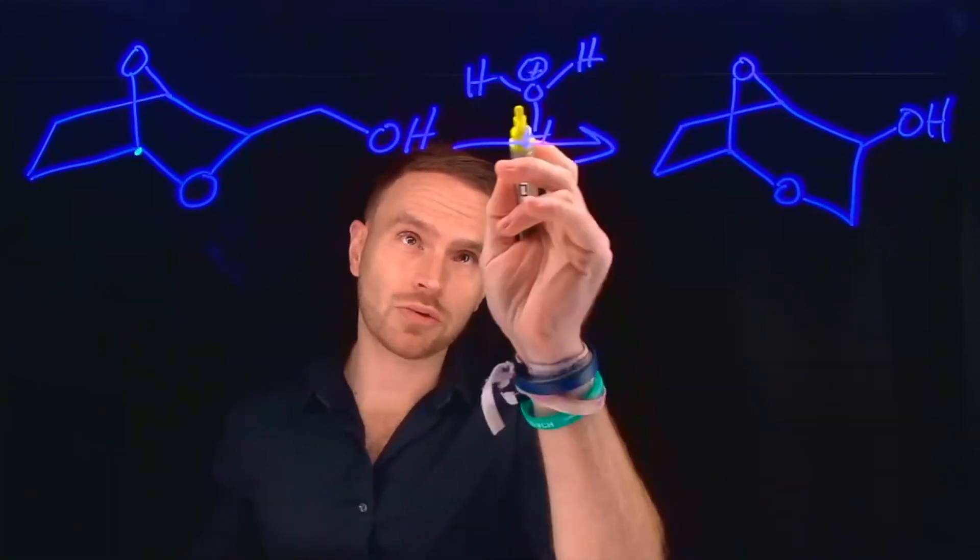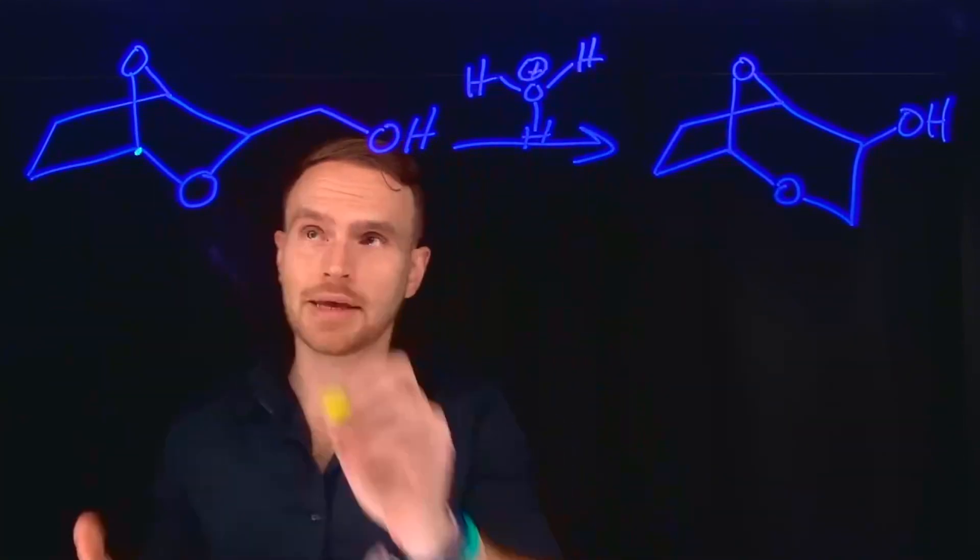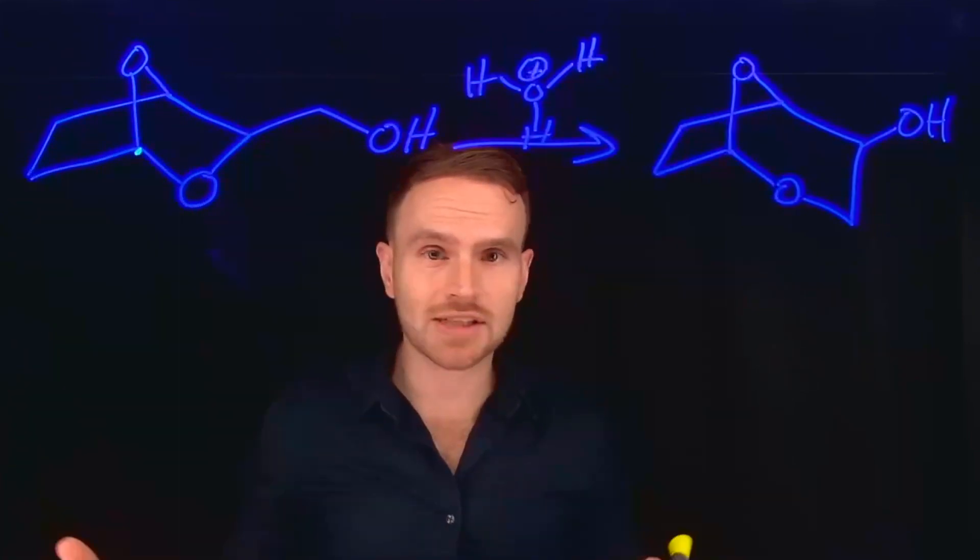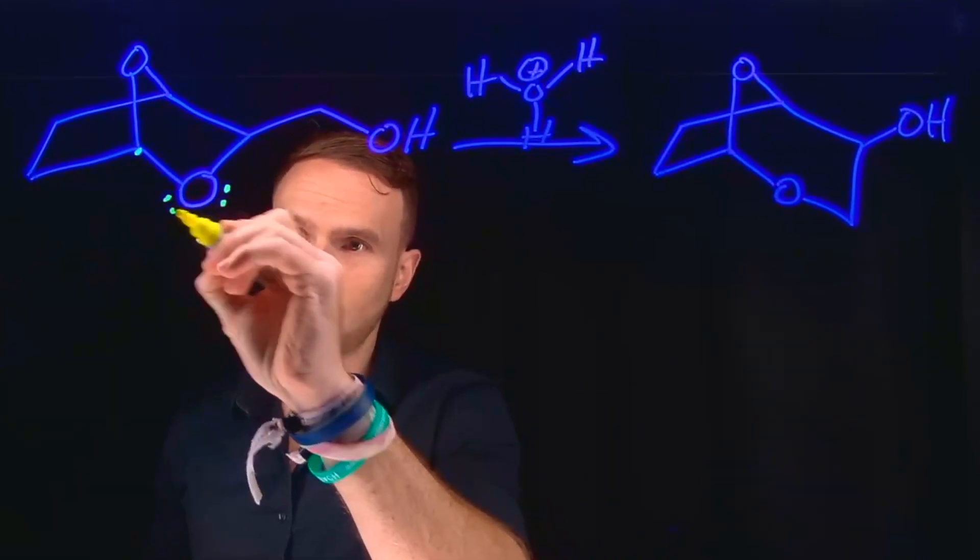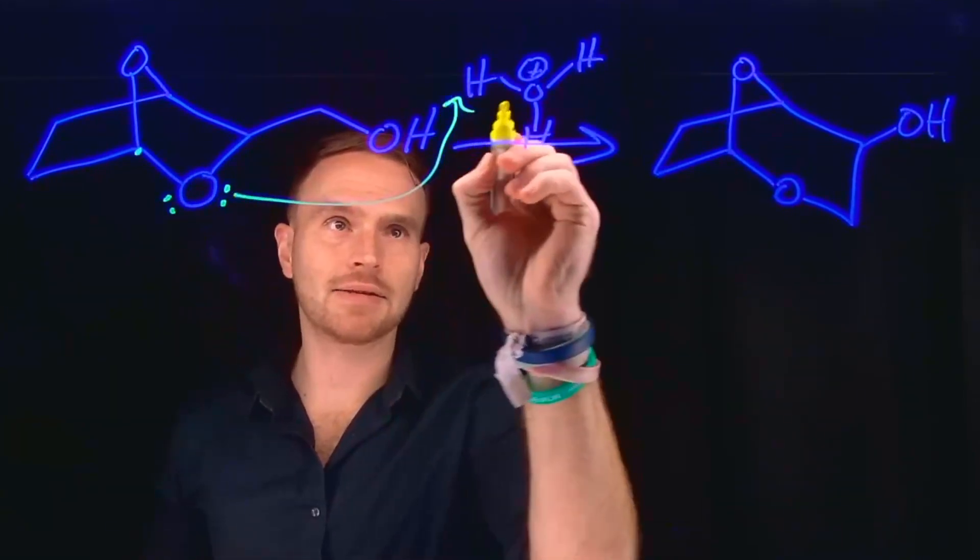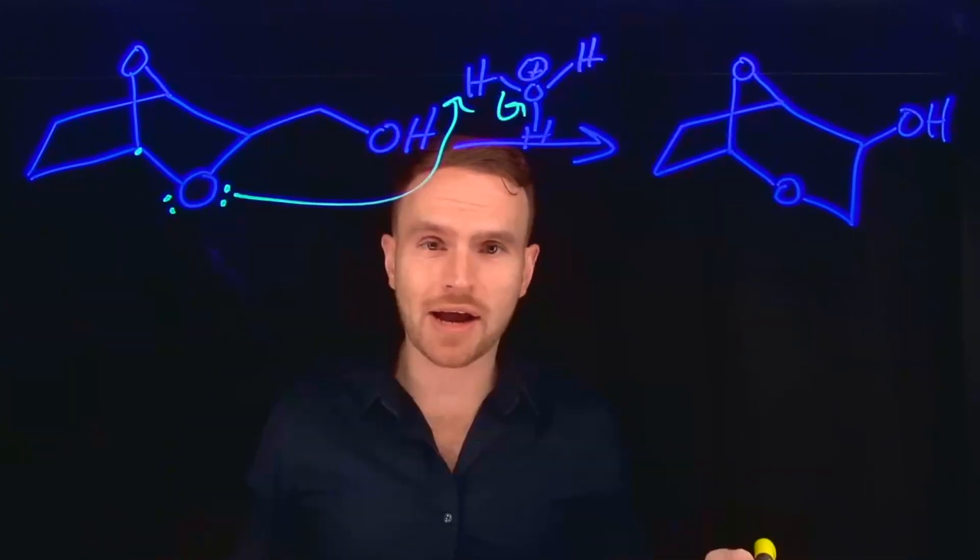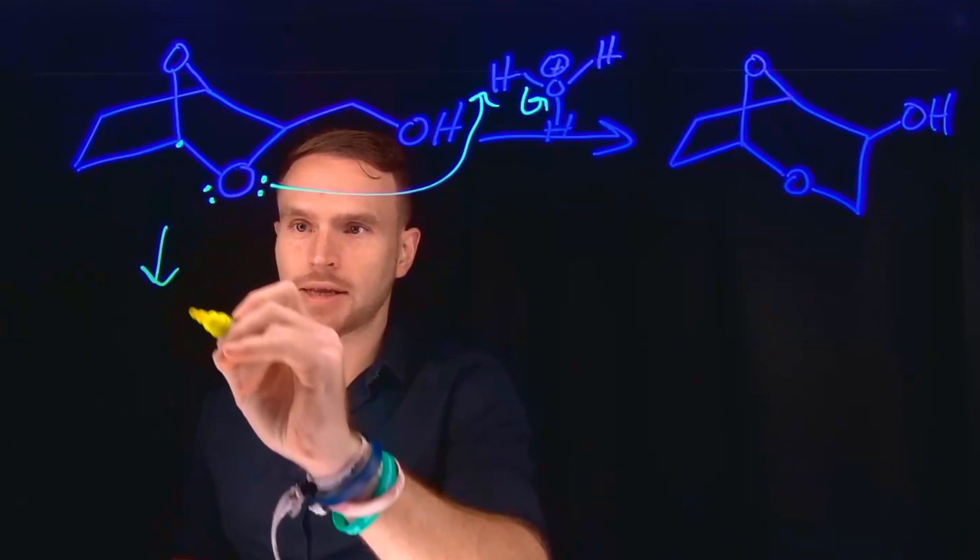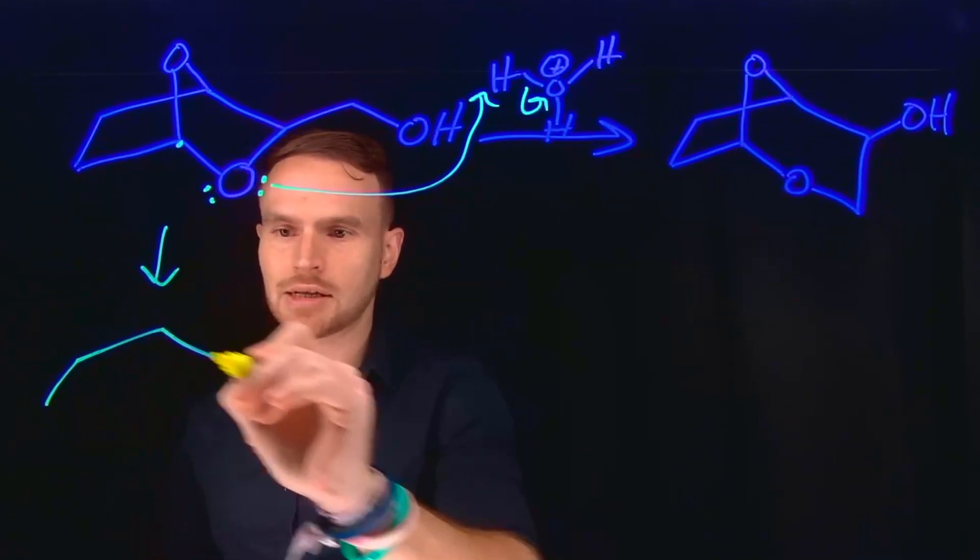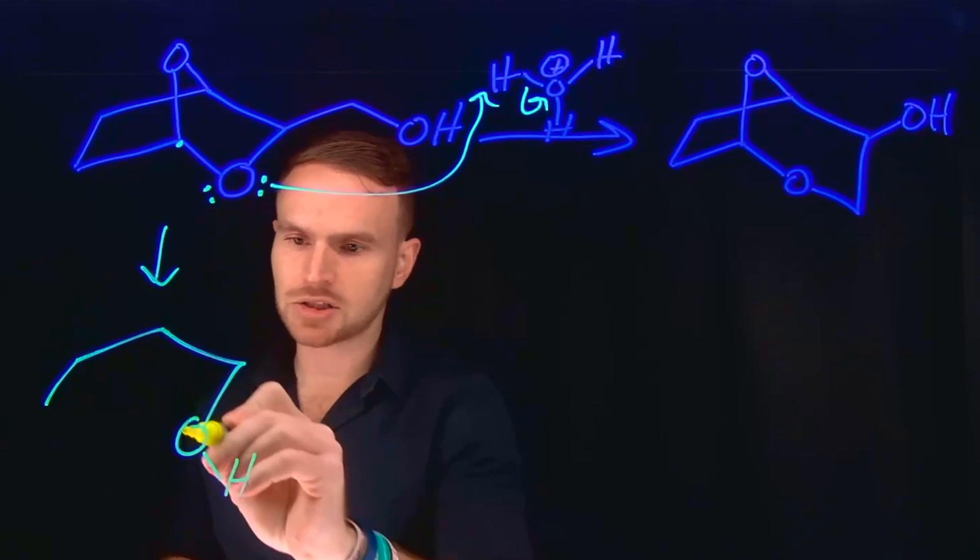And since we're introducing an acid, what happens then is that one of these oxygens of this acetal is going to be protonated. In fact, that's the first step where this oxygen will be protonated by the acid to generate water as a byproduct. And once this acetal oxygen has been protonated, what's going to happen next is it's going to leave behind a positive charge at that oxygen.